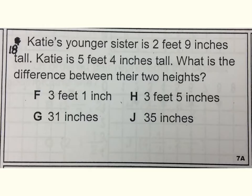Number eighteen. Katie's younger sister is two feet nine inches tall. Katie is five feet four inches tall. What is the difference between their two heights?